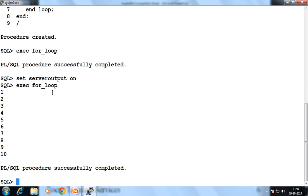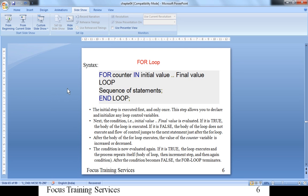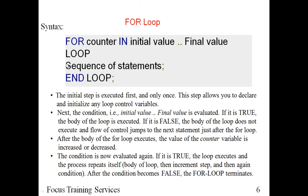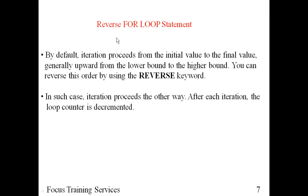So this is the simple for loop. Now there is another concept. Suppose I want to display the output in reverse order or in a decreasing format. By default, the iteration proceeds from the initial value to the final value — generally upward from the lower bound to the higher bound. You can reverse this order by using the REVERSE keyword. This reverse keyword is used to print the value from the upper bound to the lower bound, in reverse order — we simply say it's decrementing your for loop.